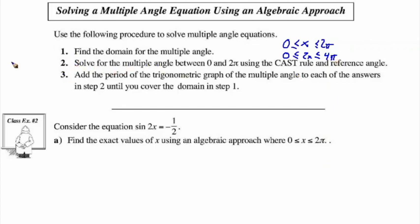Step 2 involves taking this substituted variable — let's call it capital X — and setting it equal to 2x, so we treat that as one angle and solve equations like we have in the past. Then in step 3, we add the period of the trig graph of the multiple angle to each answer until we cover all of the required domain.